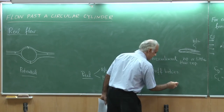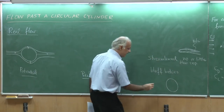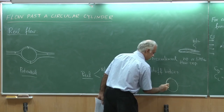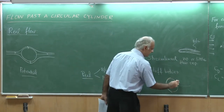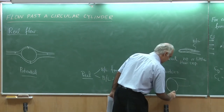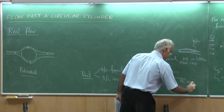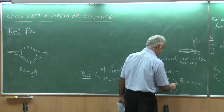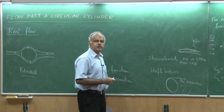In the case of a bluff body, for example a circular cylinder, you again get the formation of a boundary layer. But then the flow does not remain attached — the boundary layer separates. You can call it either the boundary layer separates or the flow separates. This region is then called the separated zone.